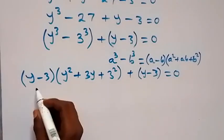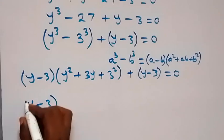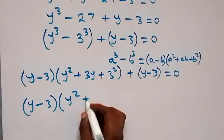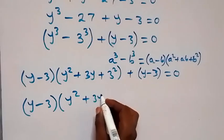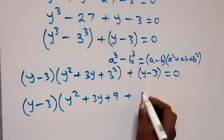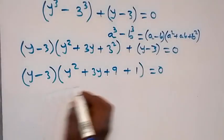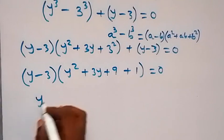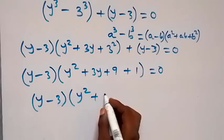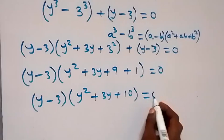We have y minus 3 common, so let's factor it out. We get y minus 3, into bracket y squared plus 3y plus 9 plus 1, equals to 0. So this becomes y minus 3, into bracket y squared plus 3y plus 10, equals to 0.